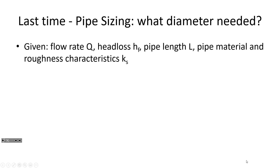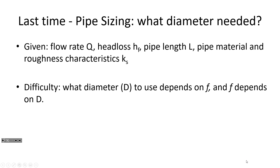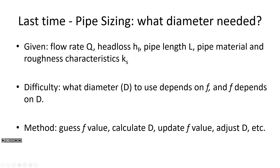Last time we went through a spreadsheet where for a known flow rate, a known head loss, and a pipe length, the pipe material was defined giving us epsilon or the relative roughness k_s. The problem with that iterative approach was that we were trying to find the pipe diameter, which depended on friction factor f, and f depended on the diameter. We solved this by guessing an f value, calculating the diameter, then updating f and adjusting the diameter iteratively until both the diameter and f value stabilized — that's when we knew we were done.